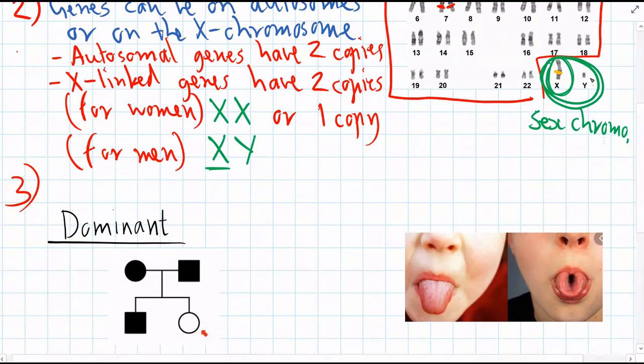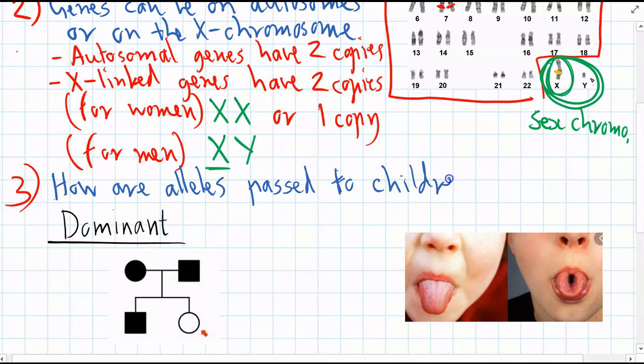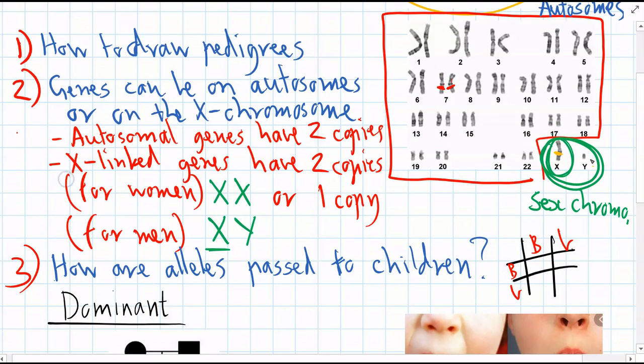The third thing to remember is we need to be able to use Punnett squares to know how genes are passed on. So how are alleles of a gene passed from parent to children? And we need to be really good at drawing Punnett squares and even figuring them out in our head to be able to solve these problems. So that's the basic information you need to know.